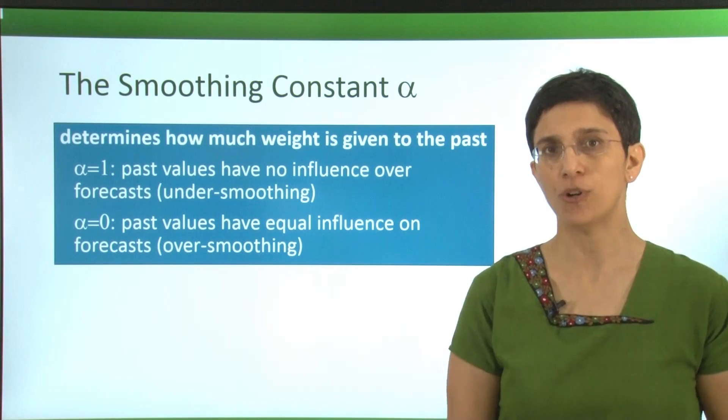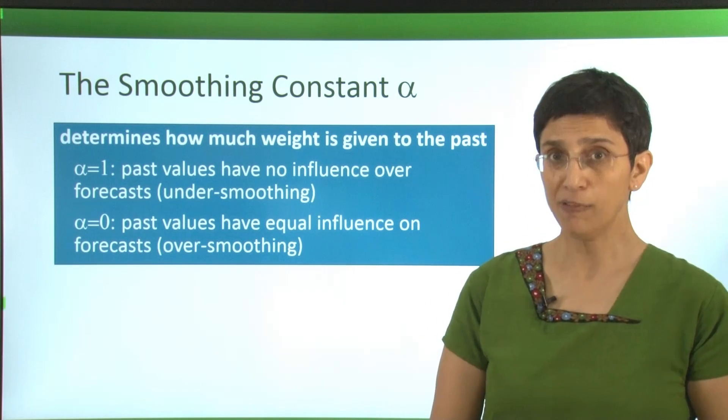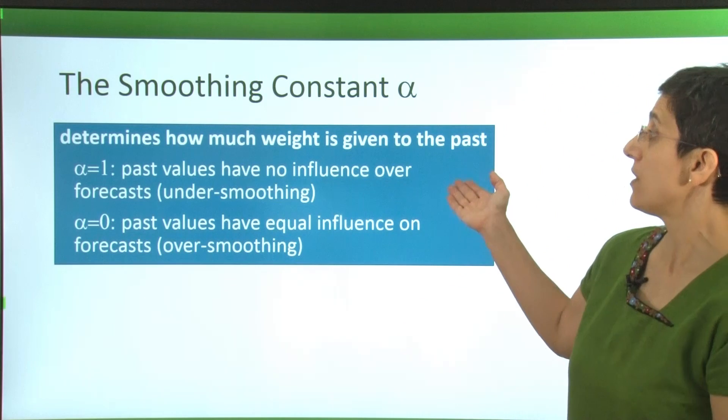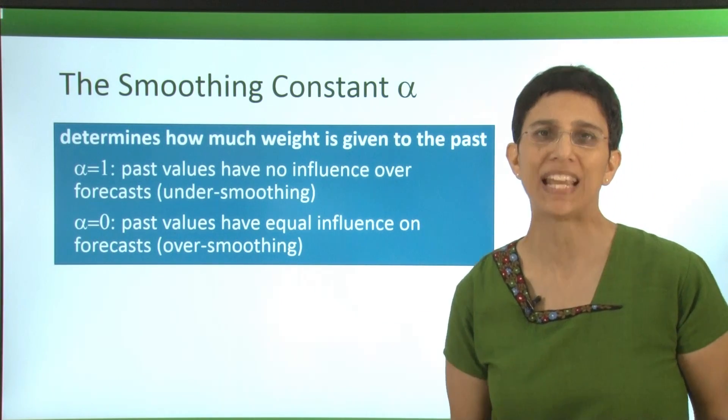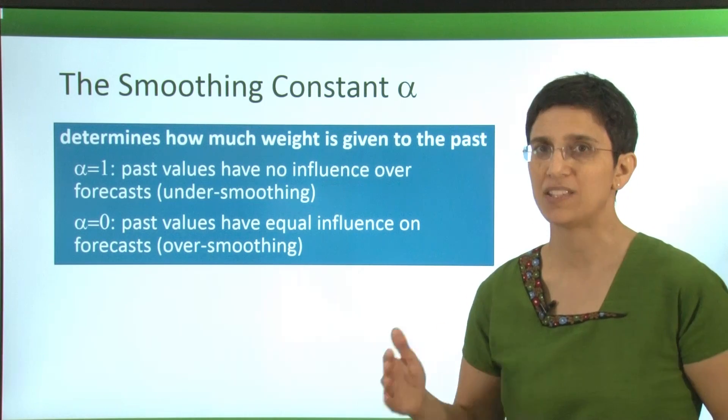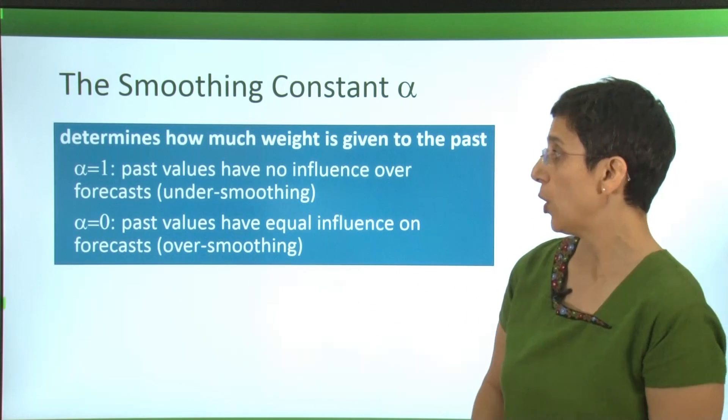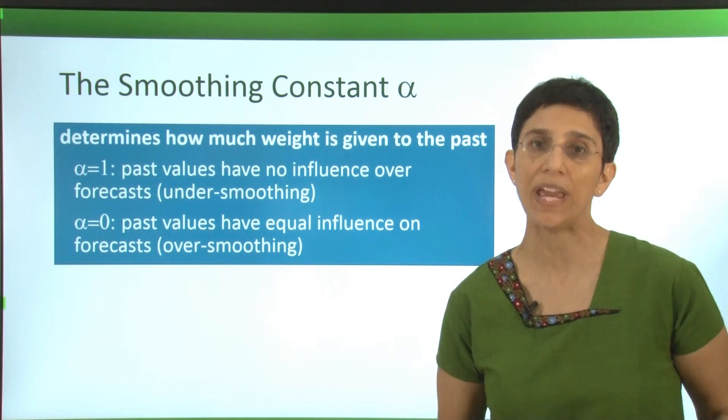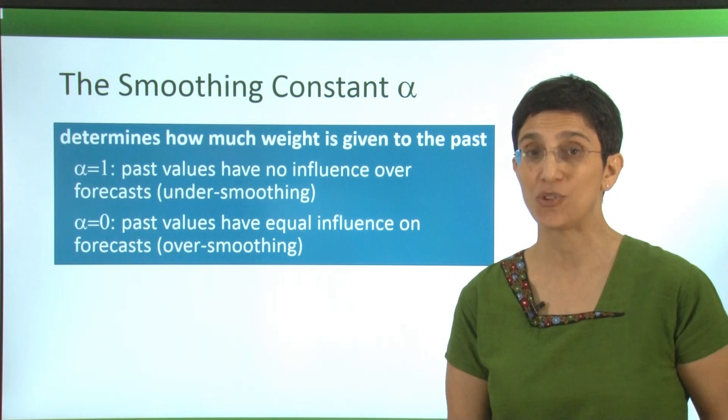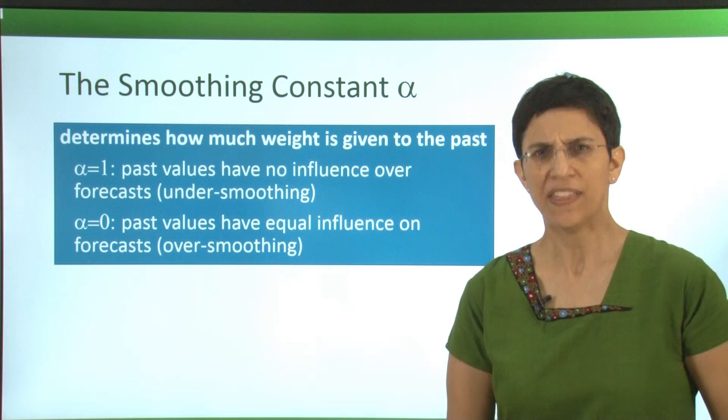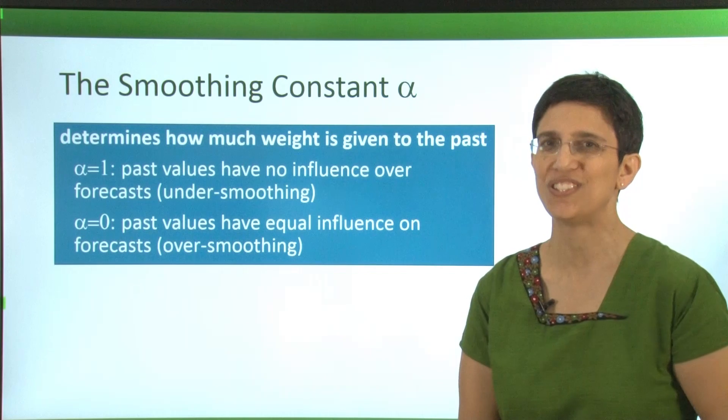The smoothing constant alpha determines how much smoothing we do. We can take the two extremes. When alpha is equal to 1, the past values have no effect on the algorithm. And in fact, it's not learning anything. So the level just remains the way we started it out. The other extreme is alpha equals 0, where all the values in our series have equal weight in our average. In that case, we're not giving any more weight to more recent information.